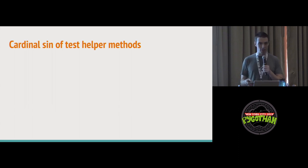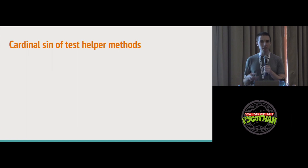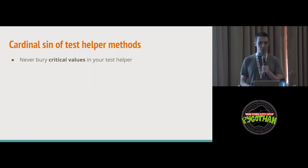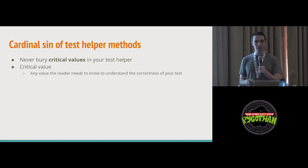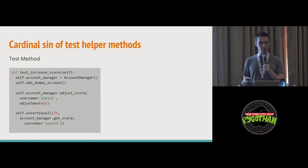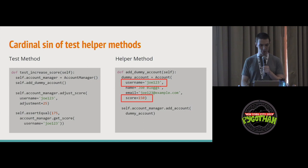Sometimes you just don't have an option — maybe another team owns that class or interface, or it's used in 2,000 places and you've got to release tomorrow. You need a helper method. When you do really need one, you have to avoid the cardinal sin of test helper methods: burying critical values. A critical value is any value the reader needs to know in order to understand the correctness of your test. So with our account manager object again, in the helper method the reader doesn't know where Joe123 came from or why the score is 150 — those critical values are buried inside the helper, obscuring the reader's understanding.